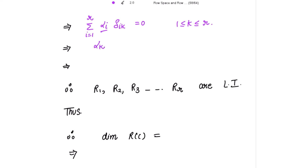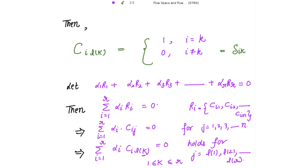This means alpha_k = 0 for k = 1, 2, ..., R, which implies alpha1 = alpha2 = alpha3 = ... = alphaR = 0. Since all scalars in the linear combination of R1, R2, R3, ..., RR are zero, this is precisely the condition for linear independence. Therefore, R1, R2, R3, ..., RR are linearly independent.